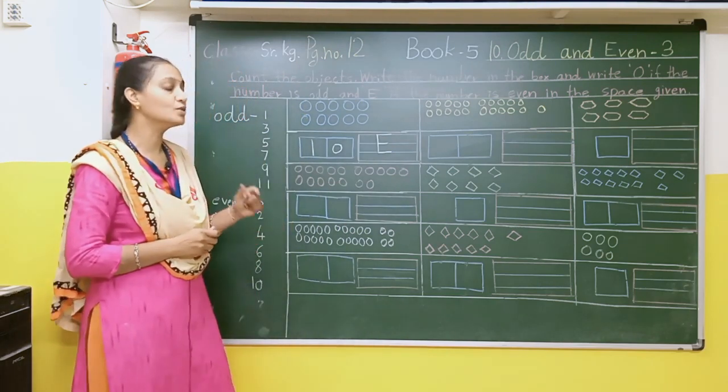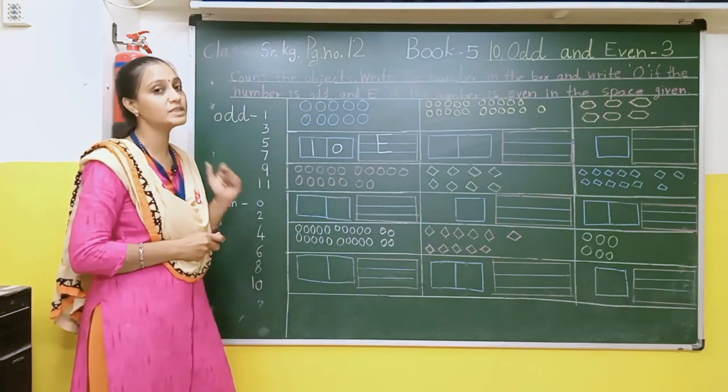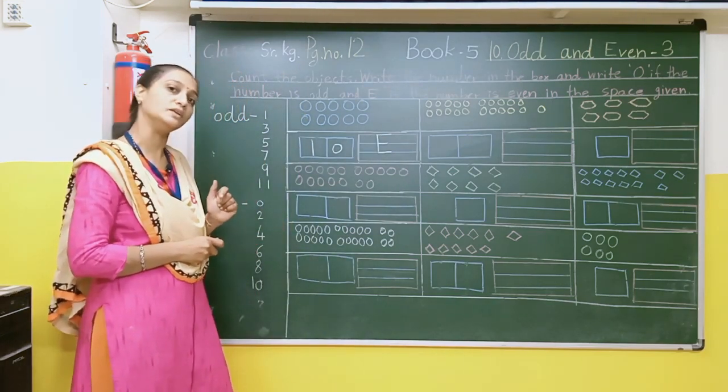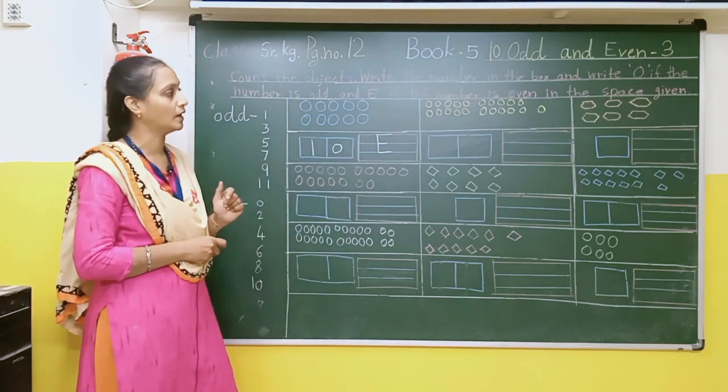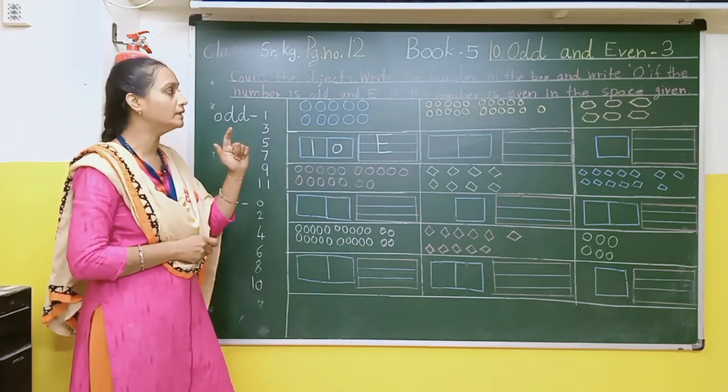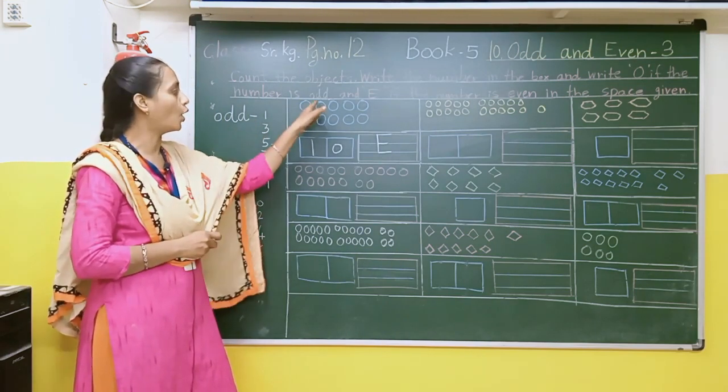Now students, remember the spelling of even: E-V-E-N. And what is odd? O-double-D. Odd.